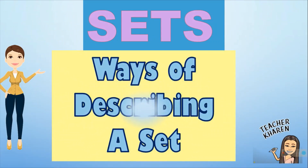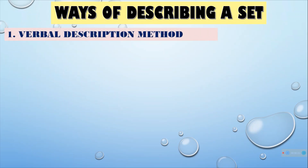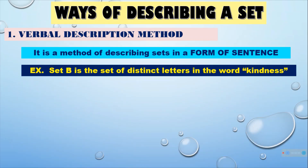Our topic is all about ways of describing a set. We have three ways of describing a set. The first one is the verbal description method. It is a method of describing a set in the form of a sentence. For example, Set B is the set of listing letters in the word 'kindness'.